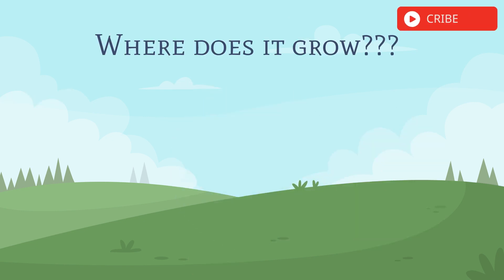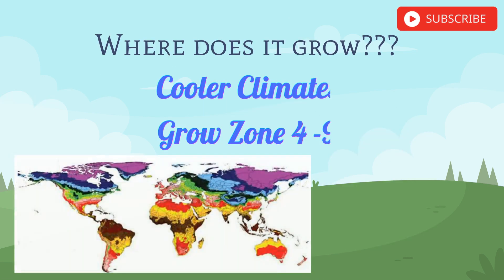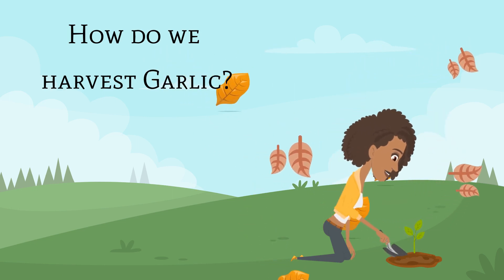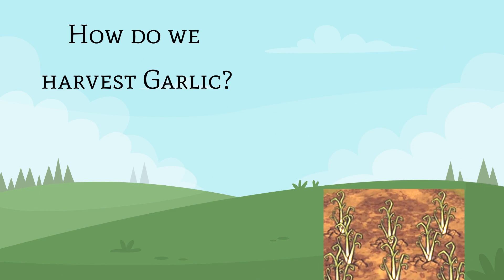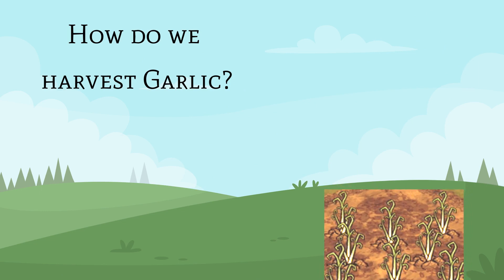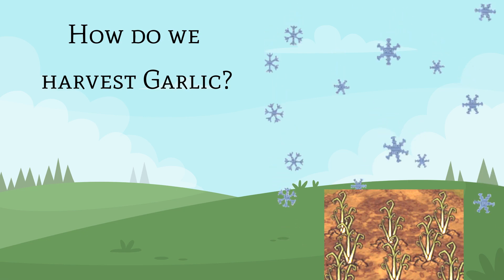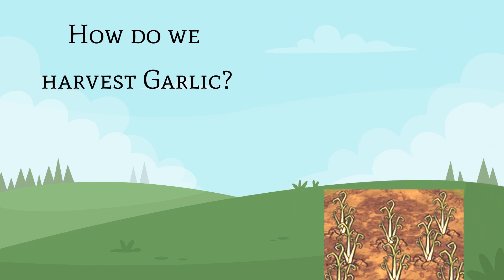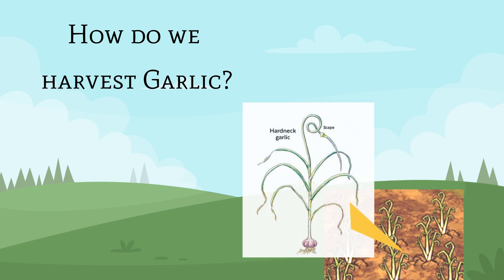Garlic grows in cooler climates, in grow zones 4 through 9. Garlic is usually planted in the fall, before the ground freezes, and harvested the next year in late spring or early summer. Garlic does need to overwinter in order to bloom and produce a bulb. It is time to harvest garlic when the leaves brown and start to fall over. If the hard neck variety of garlic is planted, one must remove the garlic scapes, or flower stalks, that grow in the spring, which helps to produce a larger garlic bulb for harvest.